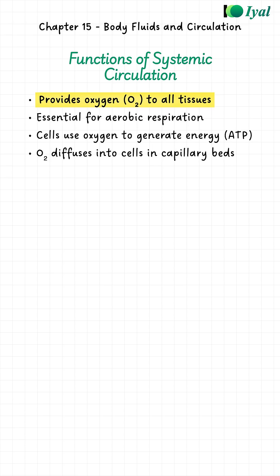Most importantly, oxygen. Oxygen is critical. Every cell in your body needs oxygen to produce energy. Without oxygen, cells die. The systemic circulation brings fresh oxygenated blood to every organ, every tissue, every cell.